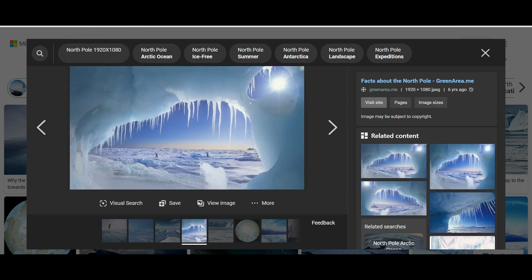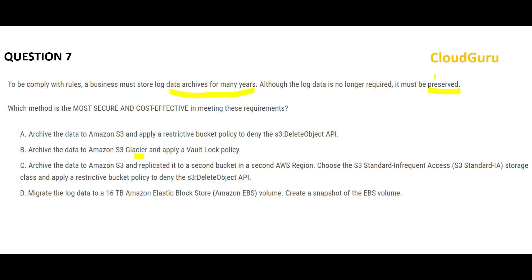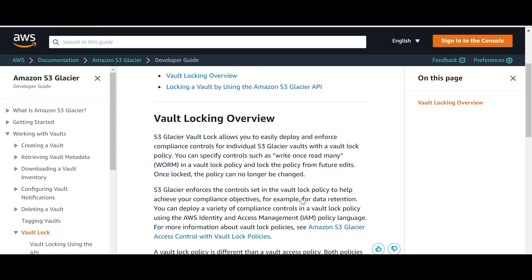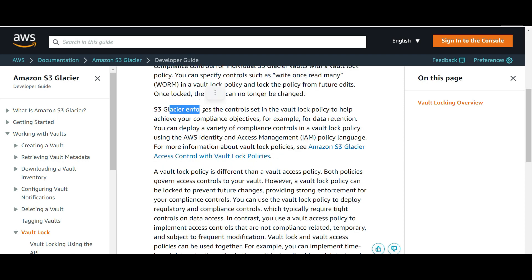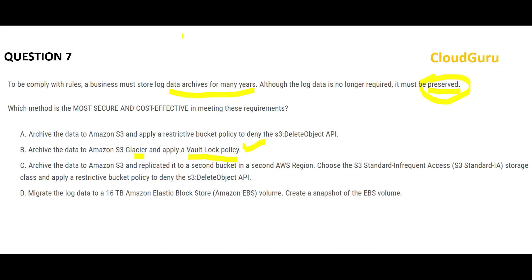You can store archives for a long time. For preservation and immutability, that is achieved using the Vault Lock policy. This ensures content is immutable — write once, read many — and Glacier enforces it to maintain compliance objectives. Hence this is my answer. Option A is wrong because it puts data on standard S3, which is the most costly S3 tier, and denying delete access does not make it cost-effective.